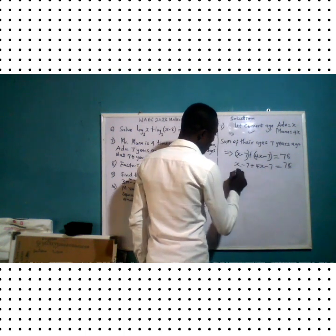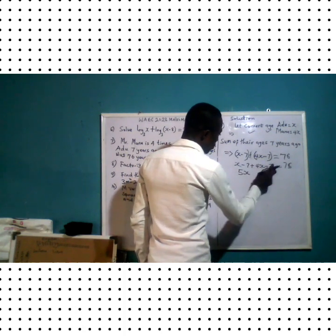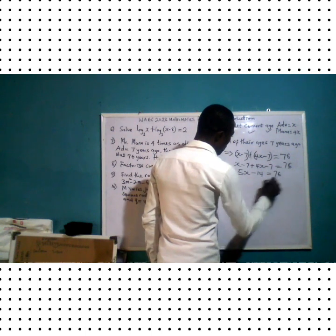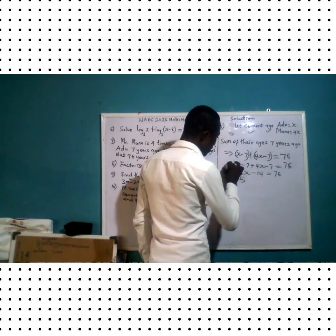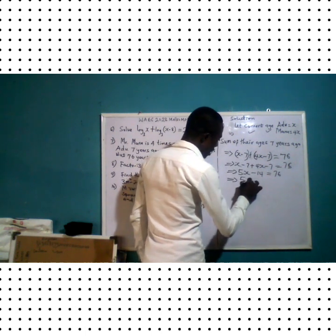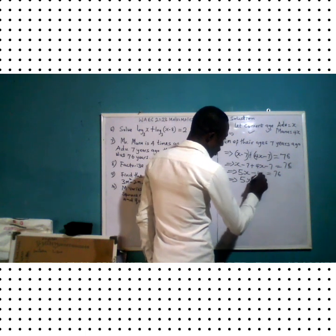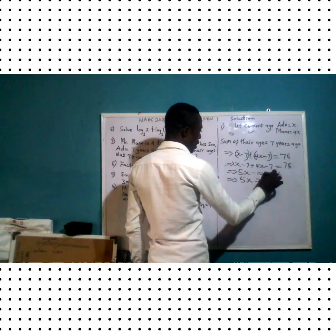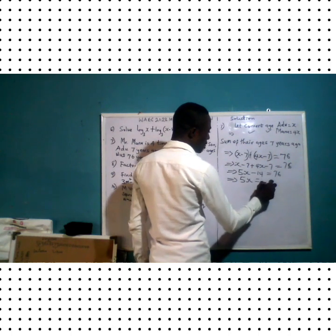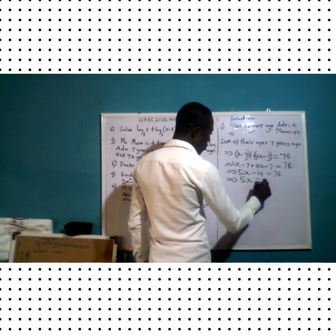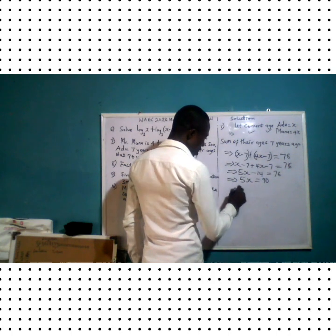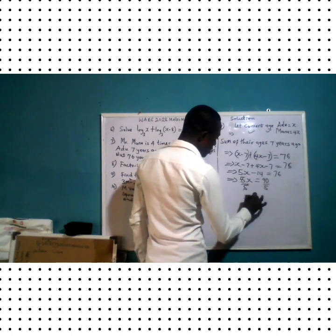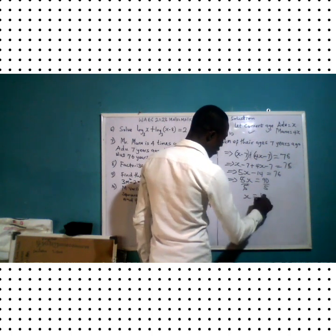Adding: x plus 4x gives 5x, and negative seven minus seven gives negative 14, so 5x minus 14 equals 76. This implies 5x equals 76 plus 14, which gives 5x equals 90. Dividing both sides by 5, x equals 90 over 5, which gives x equals 18.